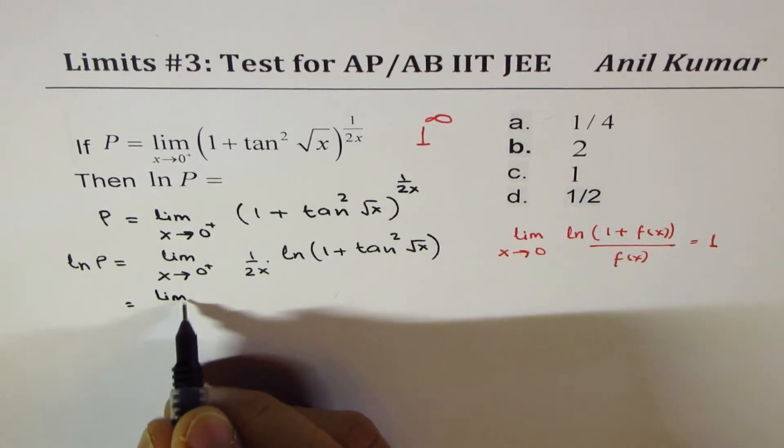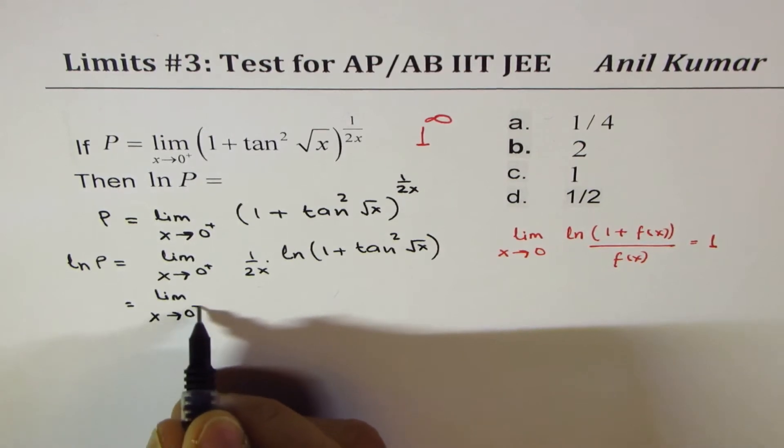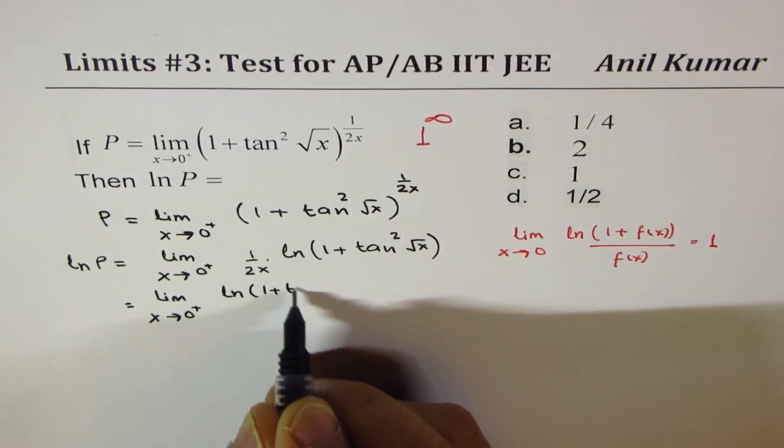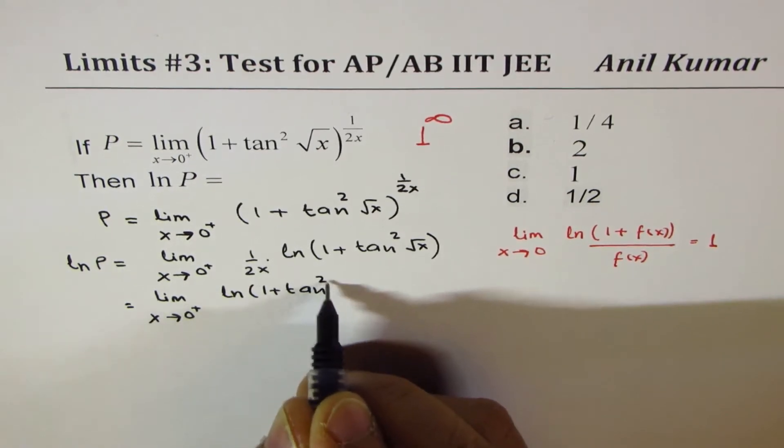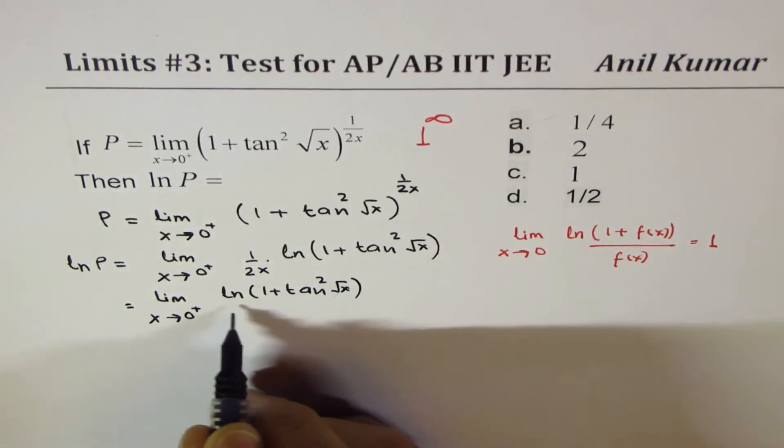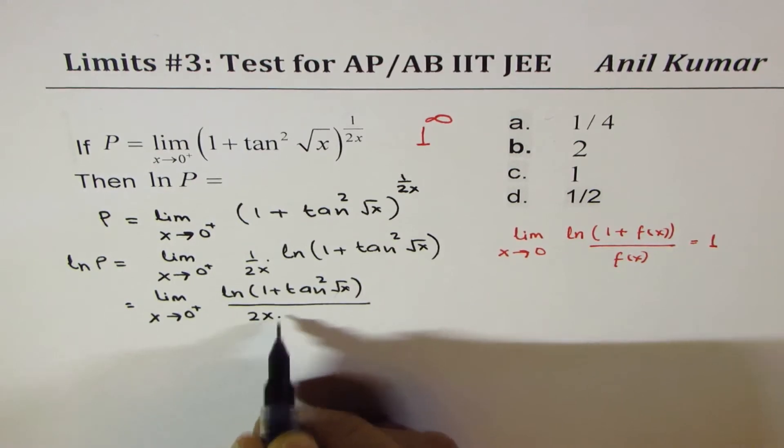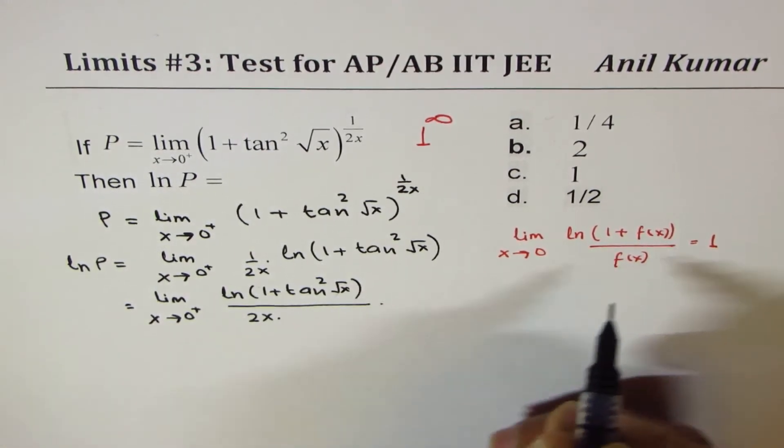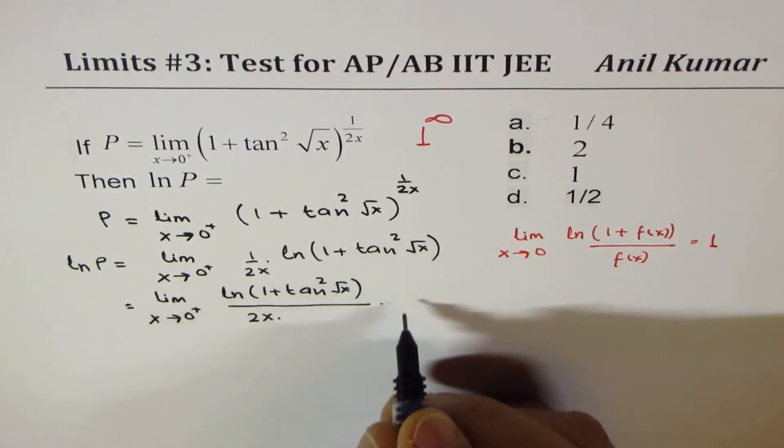So we could write this as limit x approaches 0 plus. We have ln(1 + tan²√x). Now we already have 2x here, and then I am going to multiply and divide by the term tan²√x.